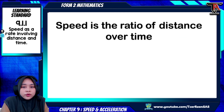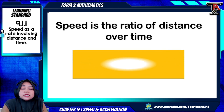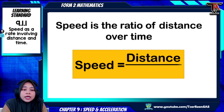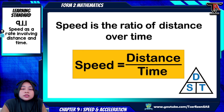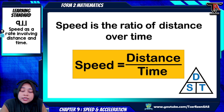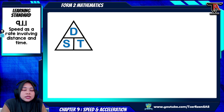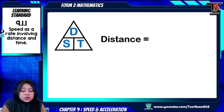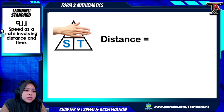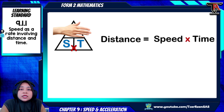Here is our conclusion for this video. Speed is the ratio of distance over time. The triangle shows the alphabets D, S, and T: D is for distance, S is for speed, and T is for time. If the question asks for distance, cover the D in the triangle — what remains is S and T, meaning distance equals speed multiplied by time. If asking for speed, cover S — what remains is D over T, so speed equals distance divided by time.